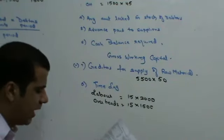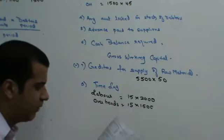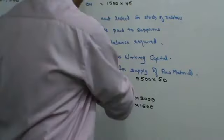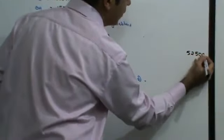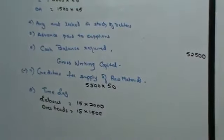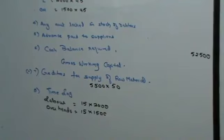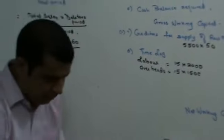Next, amount of cash in hand and bank on an average is 52,500. Cash and bank balance required is given to you as 52,500.